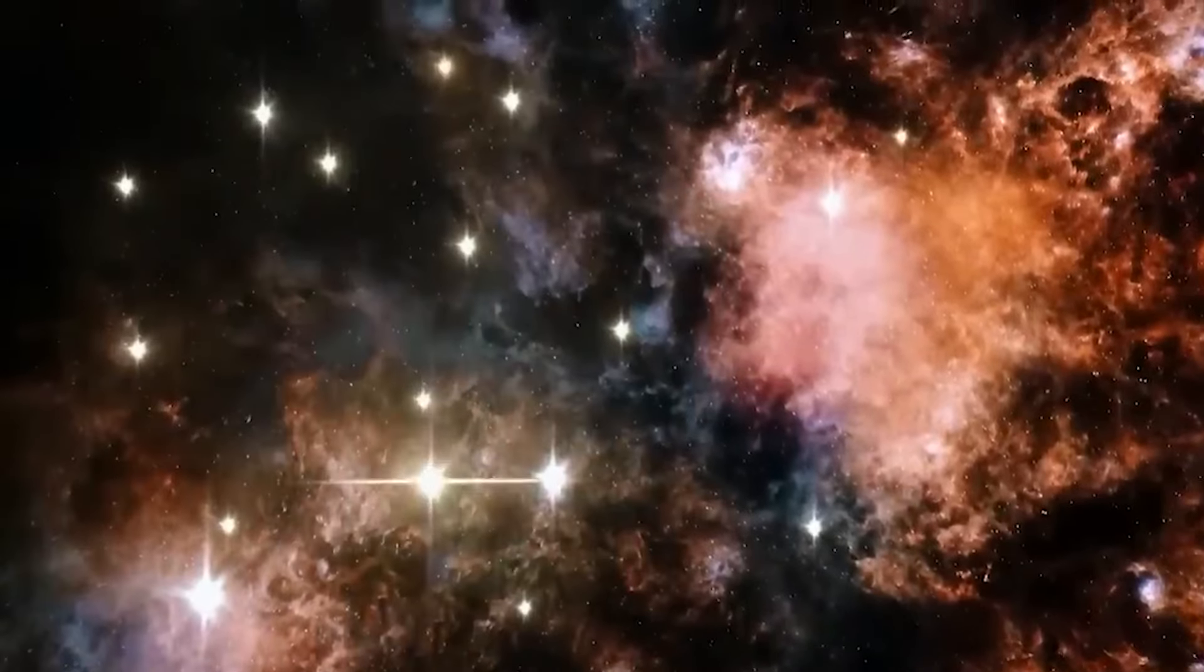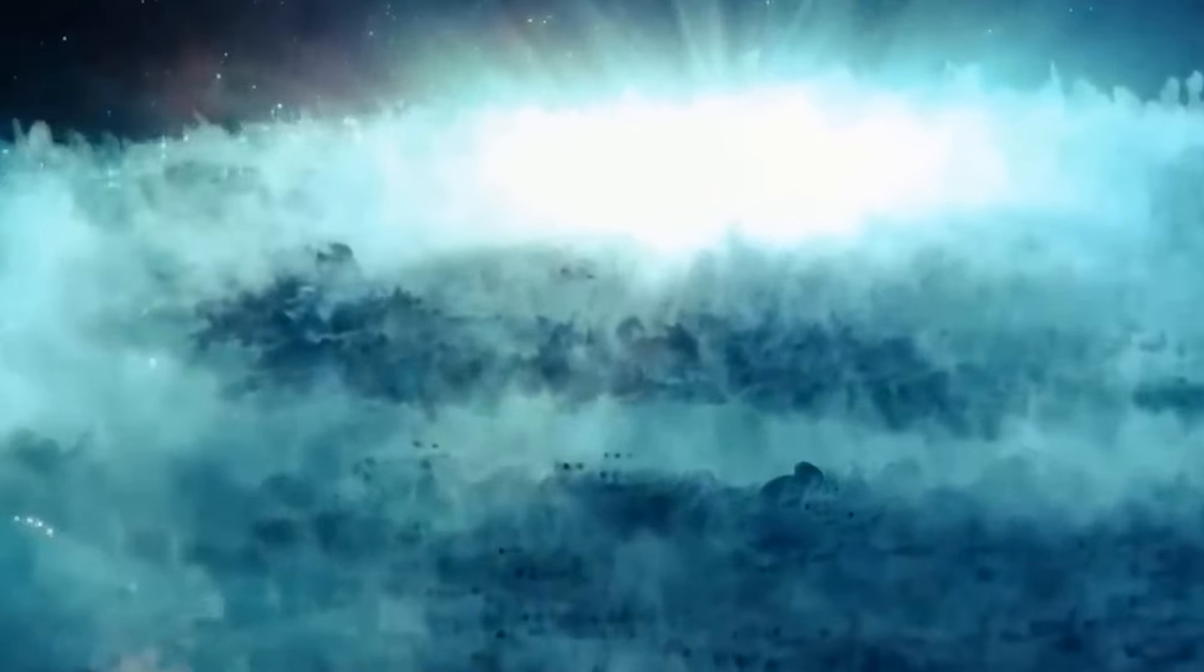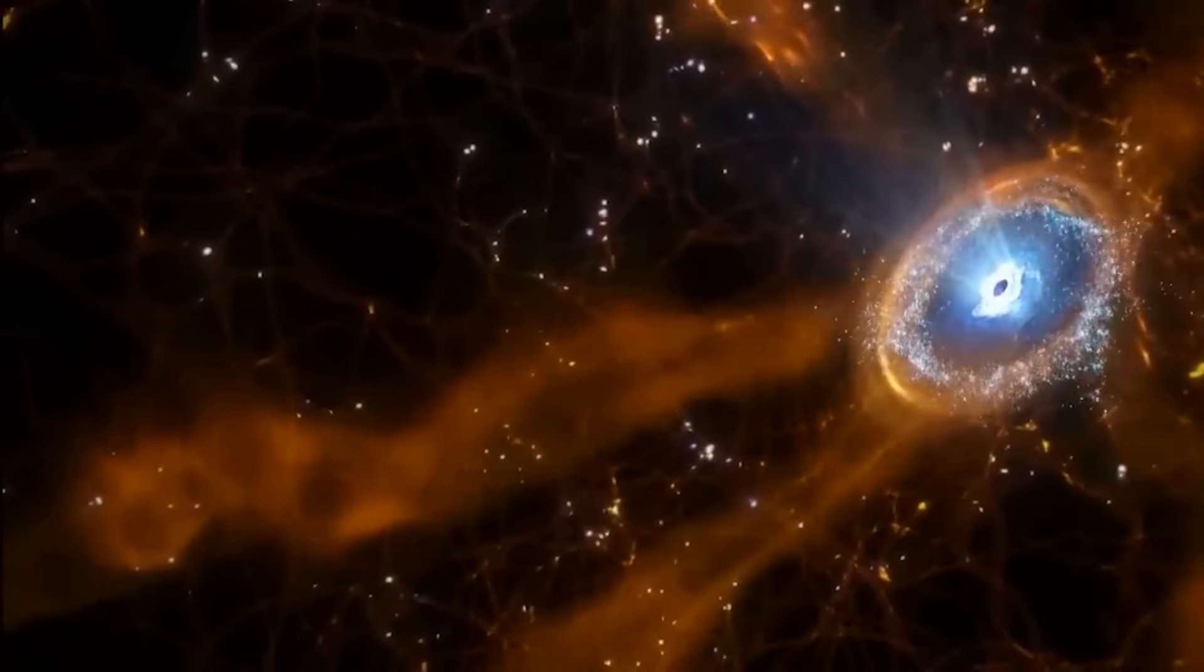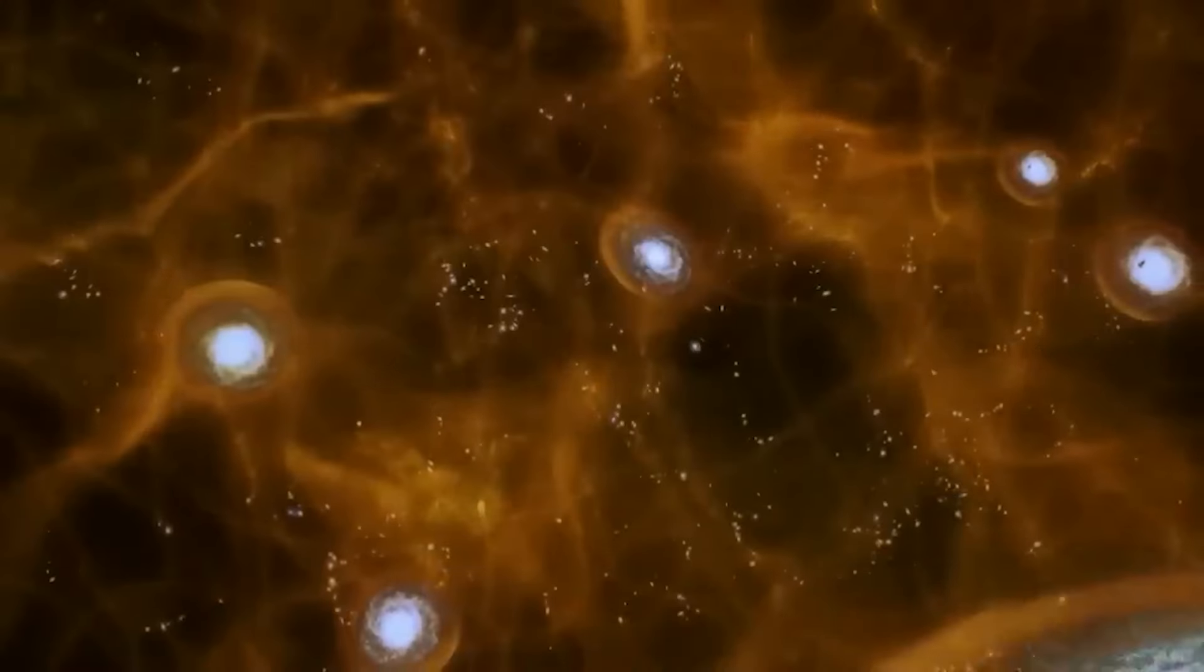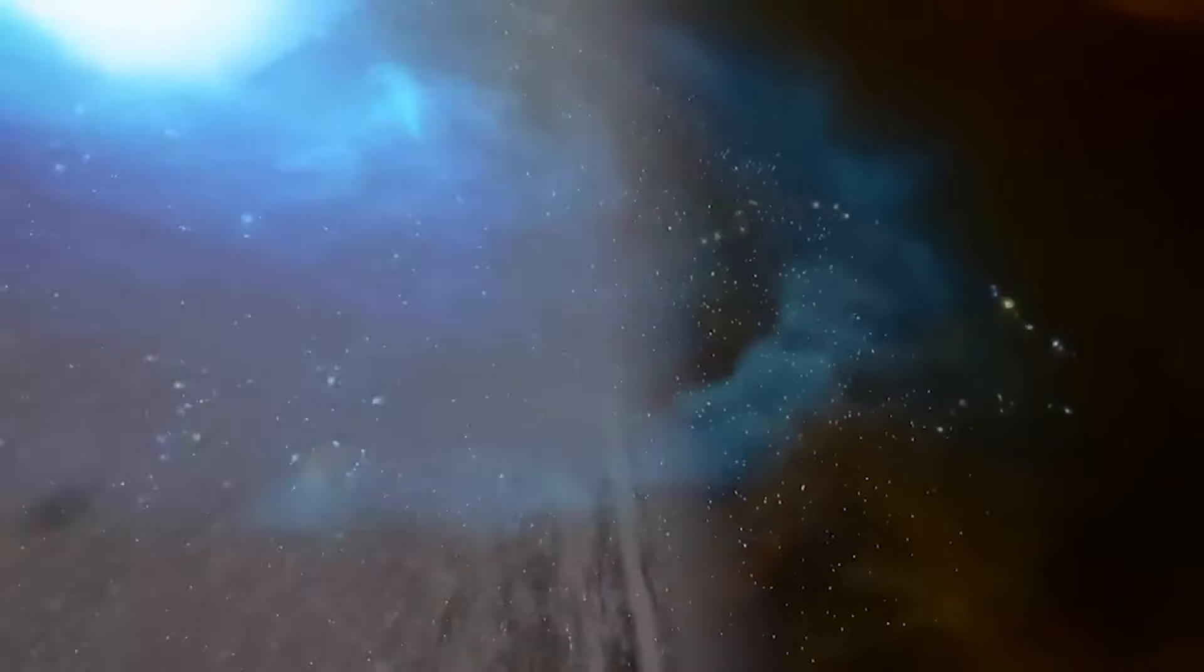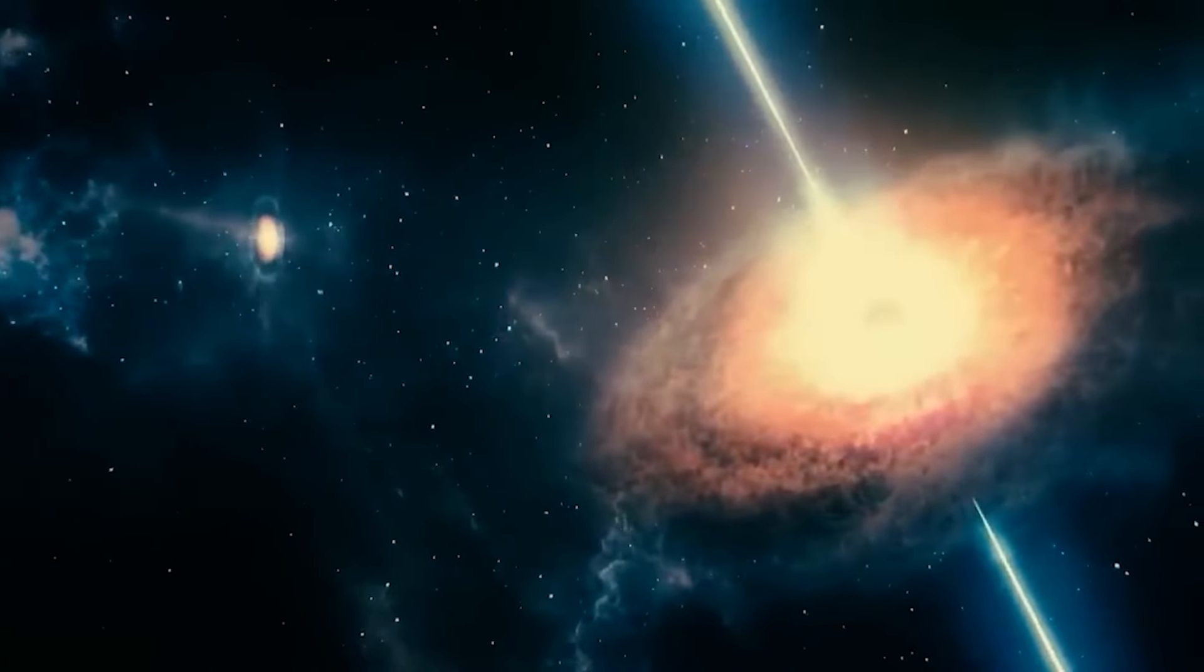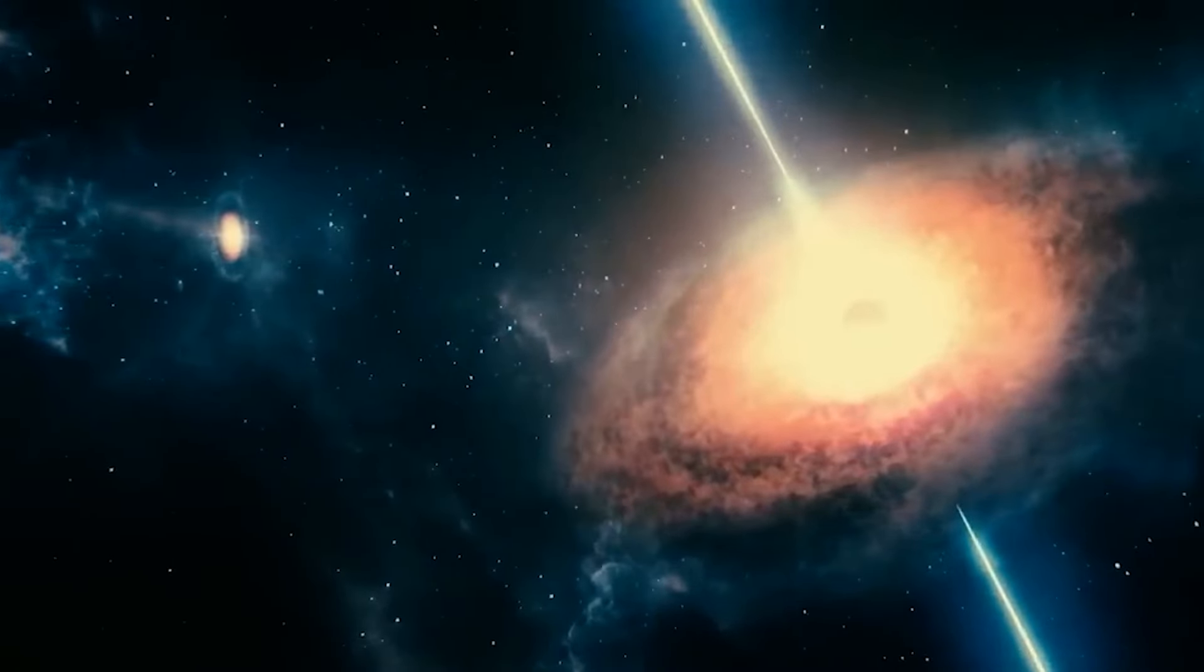Imagine it like this. Astronomers use a cosmic version of the Doppler effect to measure how far away things are. It's like hearing an ambulance siren getting fainter as it zooms past. Galaxies do a similar thing, but with light. The farther away they are, the more their light gets stretched out, making it look redder.